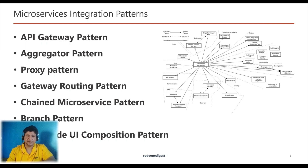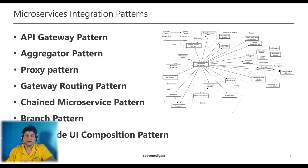Sixth, we have the Branch Pattern — the branch microservice pattern is a mix of aggregator and chain design patterns and allows simultaneous request-response processing from two or more microservices. Seventh and last in this category is the Client-Side UI Composition Pattern, where each section in the page makes a call to individual backend microservices to pull data — this is also called a single page application.